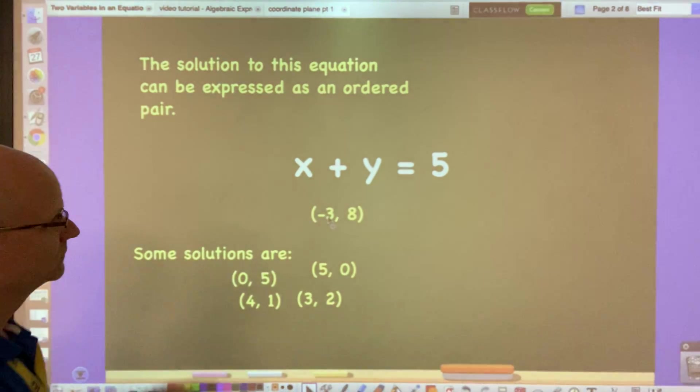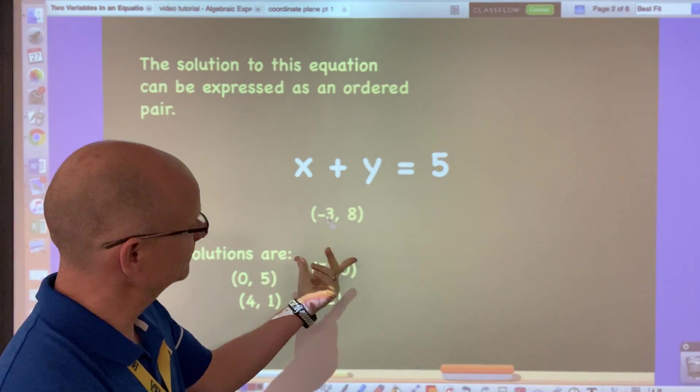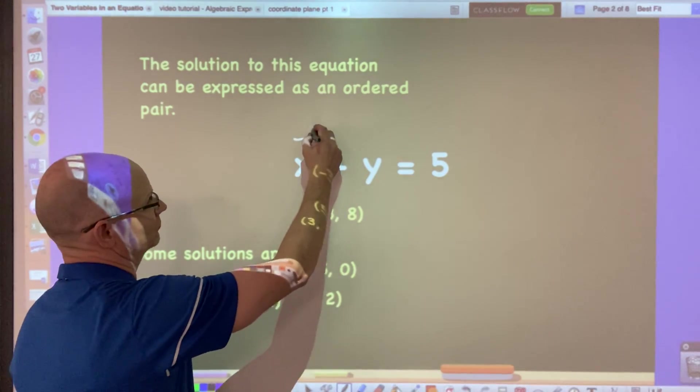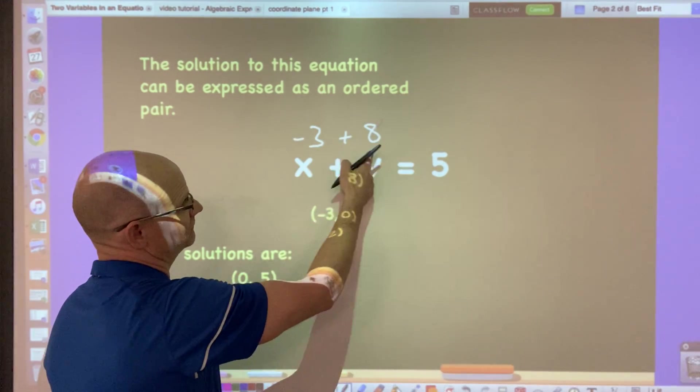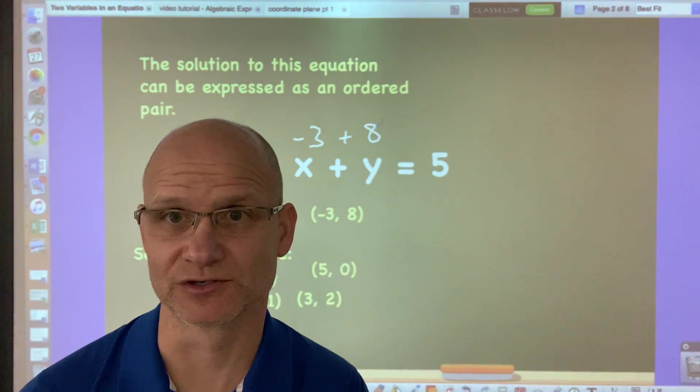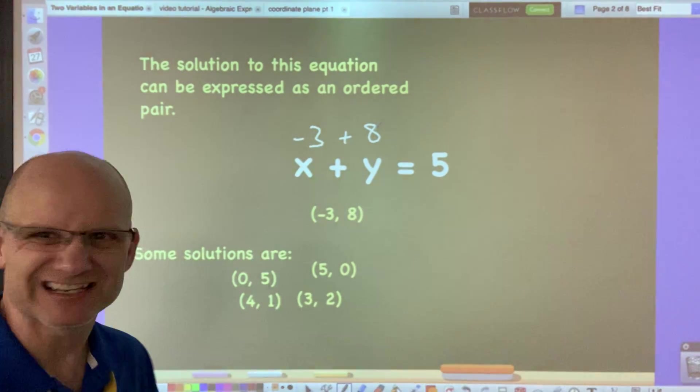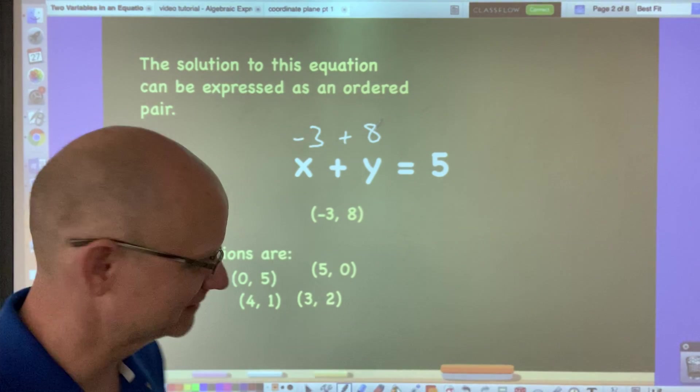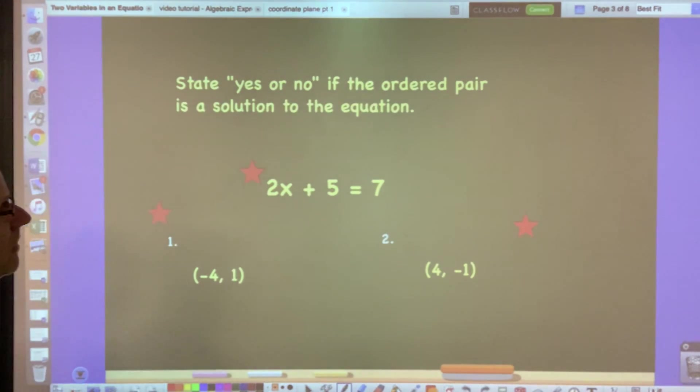Remember when the signs are different you subtract. That would work as well because -3 + 8, the signs are different we would subtract, we get 5, and you keep the sign that's furthest away from 0. So yeah, this is not too difficult. We got this.